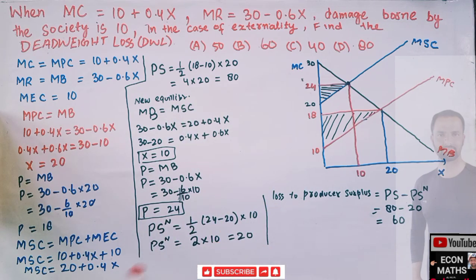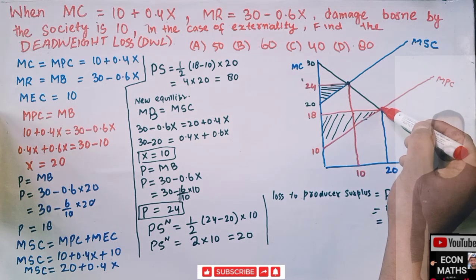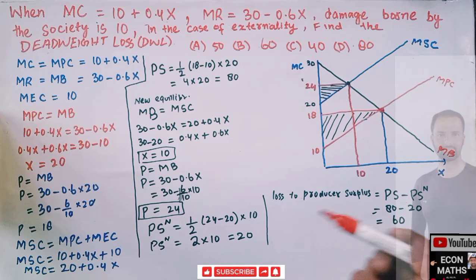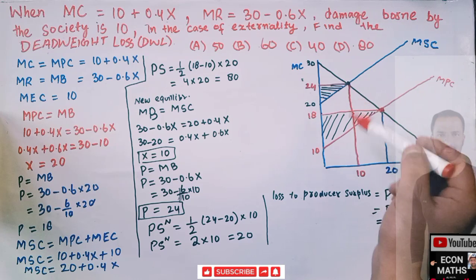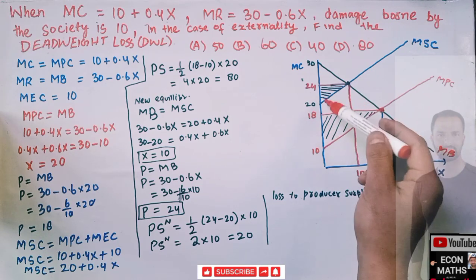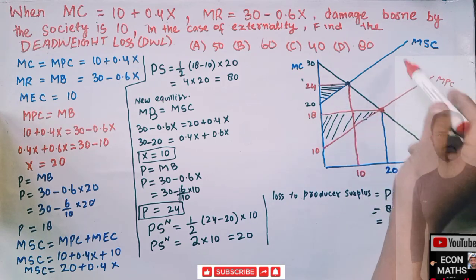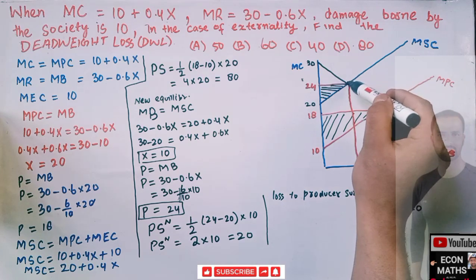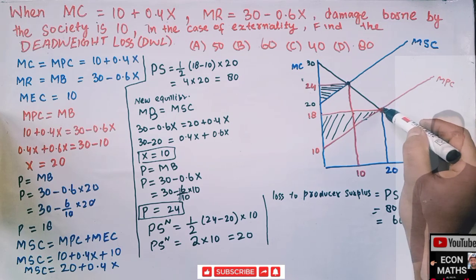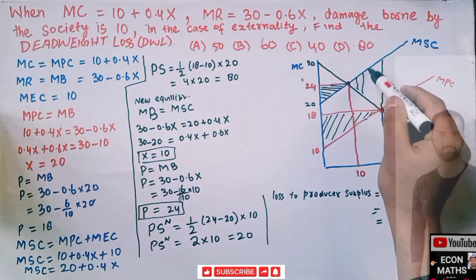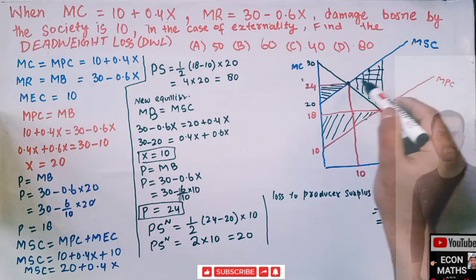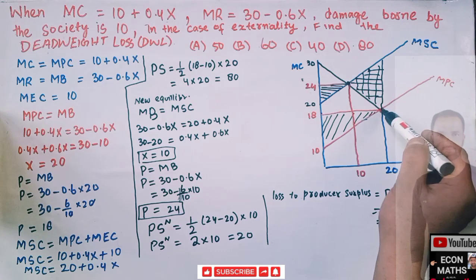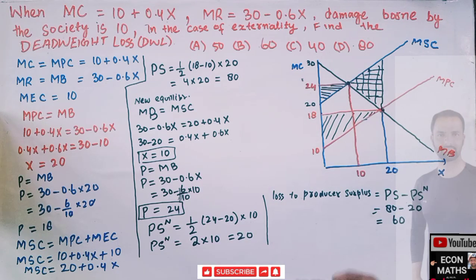Now in this video we need to find the dead weight loss. Ordinarily we were producing at the point where marginal private cost and marginal benefit curve intersect. But at the socially optimal level, we take into consideration the cost borne by the society equal to 10 — that vertical distance is 10. The dead weight loss to society will be the area of the triangle formed between these two equilibrium points.